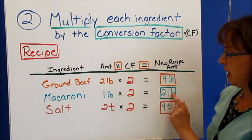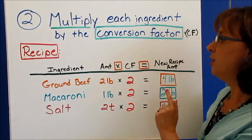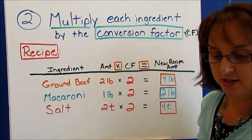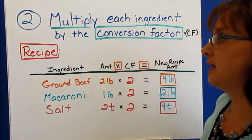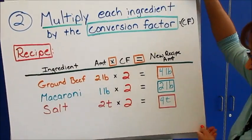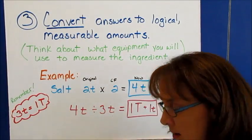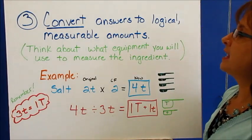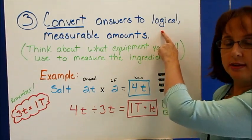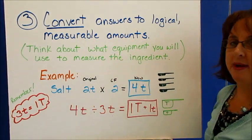This is how much we need to measure out to get our extra servings. That's step two. Step three is we're going to convert our answers to logical, measurable amounts.